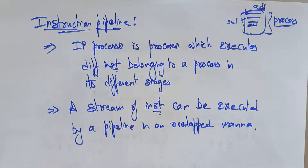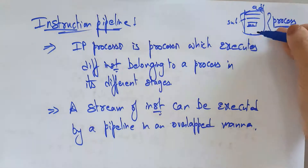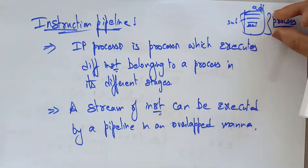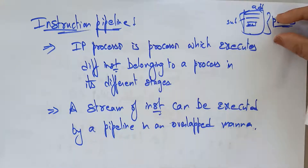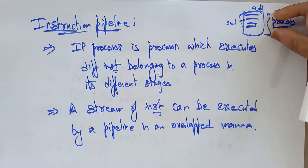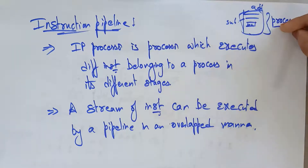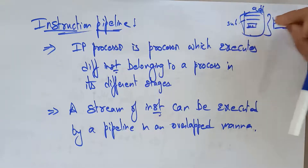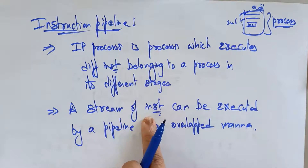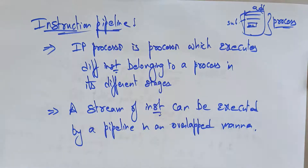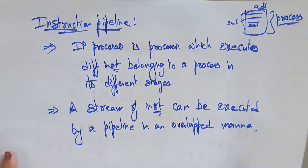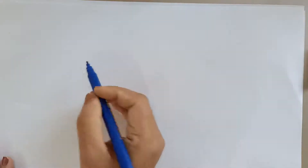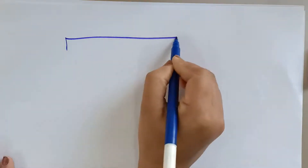A processor executes different instructions that are present in a process. In a task there is a process, and in that process different instructions are there. So these different instructions belonging to a processor, if they are executing in different stages, then you call it the concept of instruction pipeline.